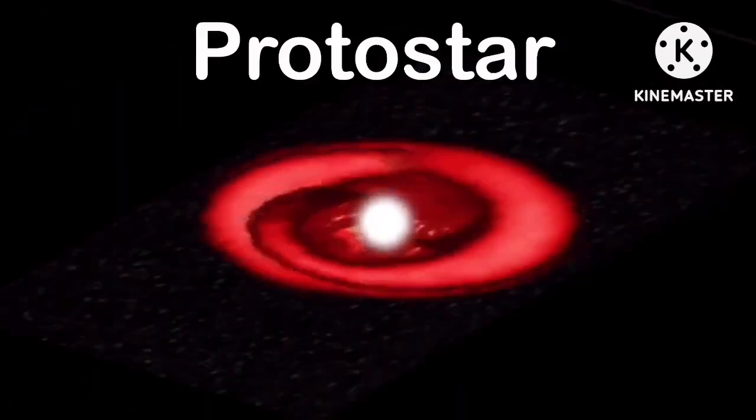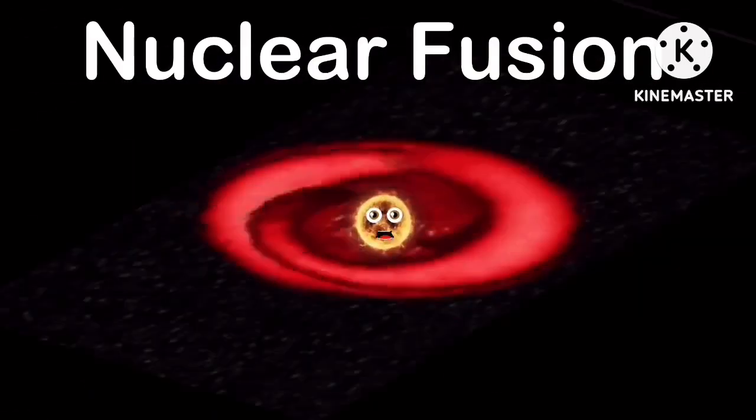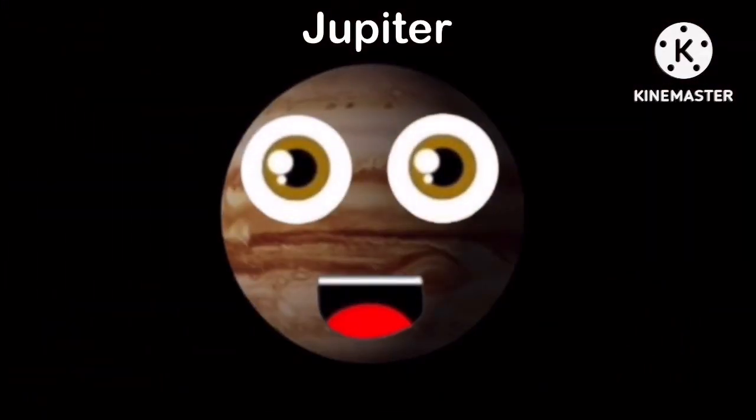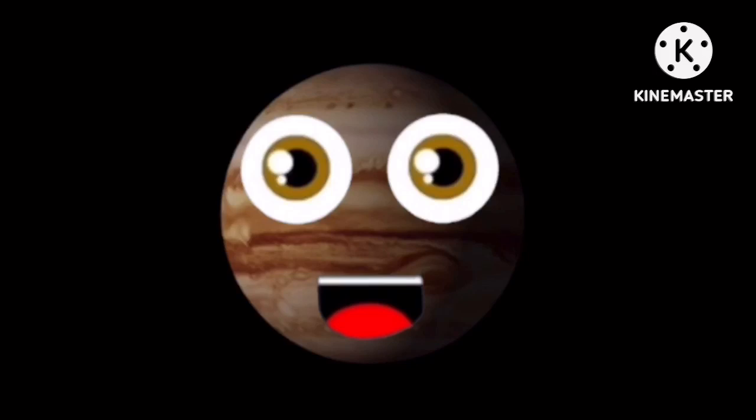When I went from protostar to fusing to a nuclear state, I had one planet that was forming. It was orbiting great. That planet was Jupiter. It formed very fast. It was a planetary bully sucking up a lot of space gas.